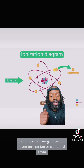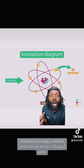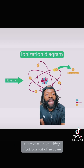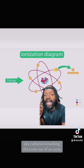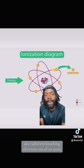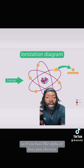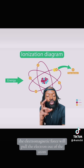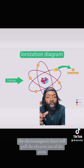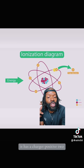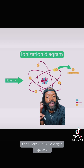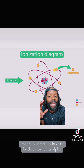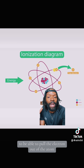Ionization is turning a neutral atom into an ion, or a charged atom — also known as radiation. Knocking electrons out of an atom. If you have alpha or beta passing the electron, depending on the size, the electromagnetic force will pull the electron out of the atom. If it's alpha, it has a charge of positive 2. The electron has a charge of negative 1, and it doesn't really have to be that close if it's alpha to pull the electron out.